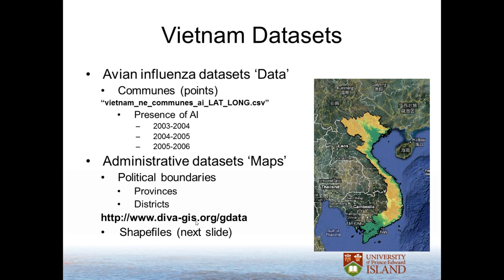Through Diva-GIS, we'll also be able to download shapefiles for provinces and districts of Vietnam. Between these two datasets you should be set to follow along the exercise provided in the handout and get going with some maps.